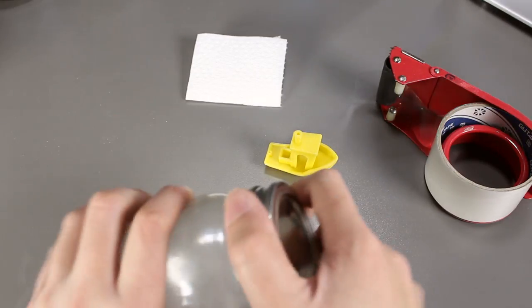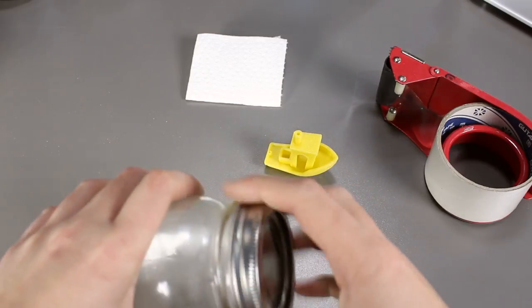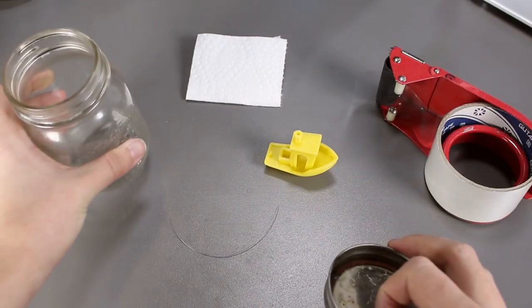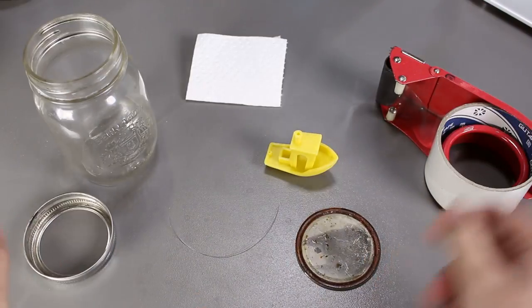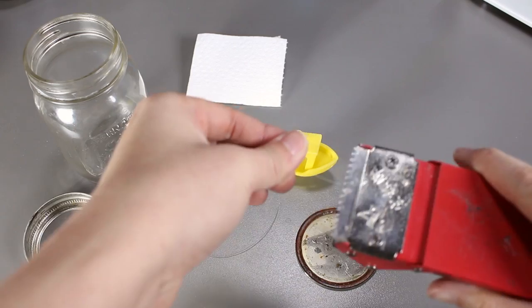I believe how this works is when the acetone starts to evaporate, it will slowly melt the outside layer of the print from bottom to top and that will give the smooth structure that we would like to see.